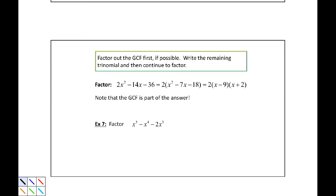So example 7, we have factor x⁵ - x⁴ - 2x³. First, we will look for a greatest common factor. The greatest common factor is x³ because all of these have 3 x's at least.